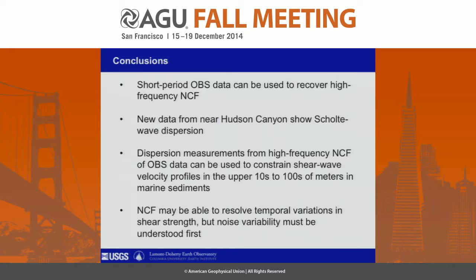To wrap up: this is a very preliminary data set result, but we can say that short-period OBS data can be used to recover high-frequency noise correlation functions. These data appear to record Scholte waves and they're dispersive. We can use this dispersion to constrain shear wave velocity as a function of depth in the upper tens to hundreds of meters in marine sediments. Furthermore, the more exciting thing about these data is that noise correlations may be able to resolve temporal variations in shear strength, but we have a lot more work to do before we can say anything conclusive about that.